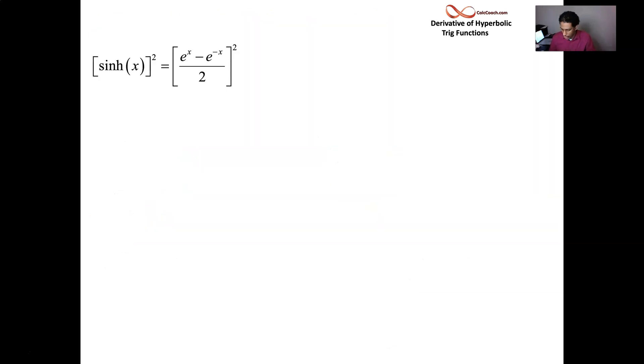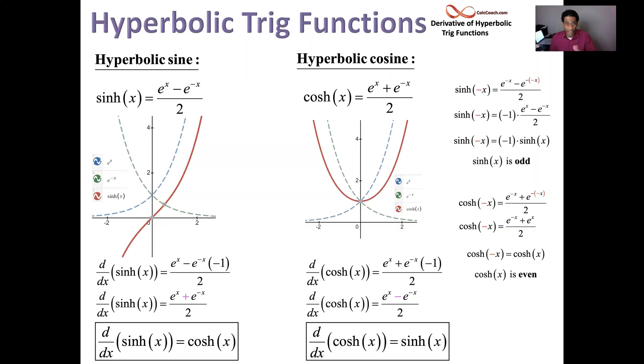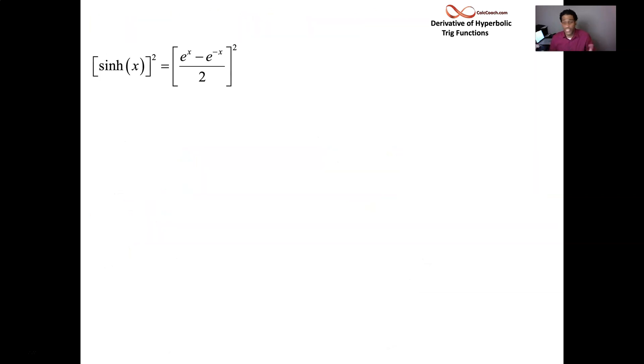Let's go to an identity regarding these two. Very important identity. You know how sine squared plus cosine squared is equal to 1? We have an identity with these two. And it's going to be hyperbolic sine squared. Let's take a look at what that is. Square at the top, square at the bottom.